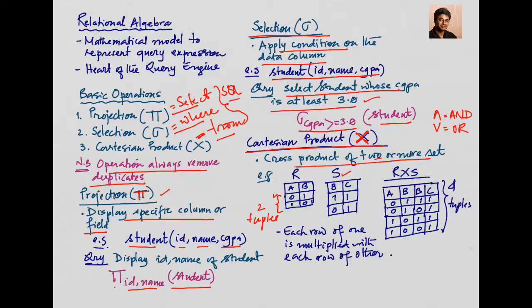When we take the Cartesian product of R and S, for every row of R we repeat all rows of S. So each row of one set is combined with each row of the other set — that is the Cartesian product. In summary, the three basic operations are projection, selection, and Cartesian product.